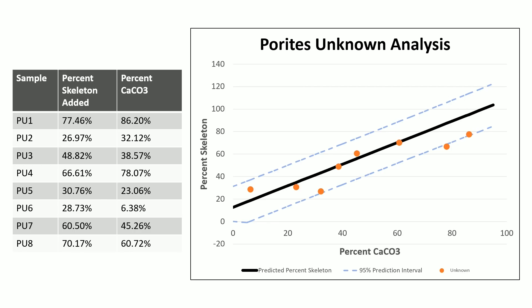To check our linear model, I had a colleague create eight unknown vials with random amounts of skeleton compared to tissue powder. As you can see, seven of these eight orange dots representing those unknown samples fell within a 95% prediction interval. So this is a fairly good way of assessing how much calcium carbonate is in each of our tissue samples. We can use this in future mass spec projects to ensure we're normalizing in the best way possible — perhaps using some combination of wet weight and percent calcium carbonate.